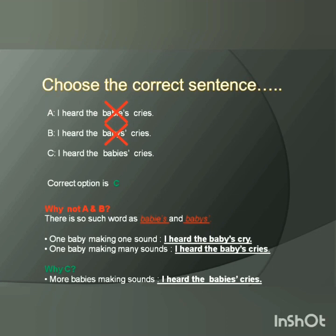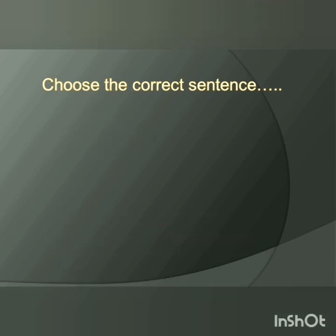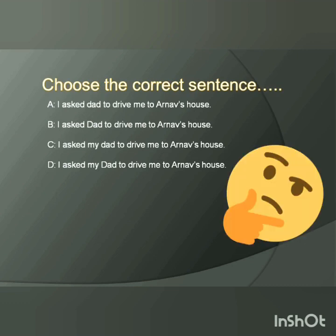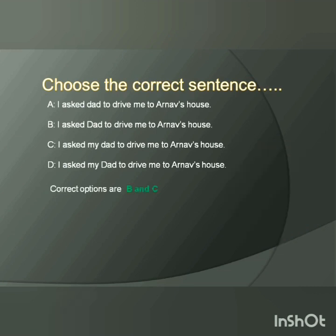Now let's get ready for the next teaser. The next teaser will be on capitalization of noun. On the screen, four sentences will appear. Out of four options, two options are correct and two options are wrong. Take your time and think which two options are correct. I hope you are ready with the correct options. Correct options are B and C.